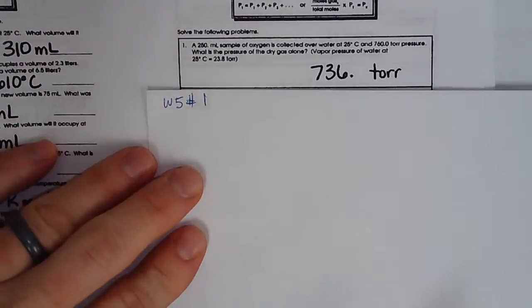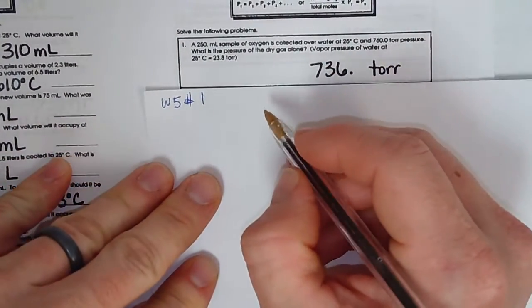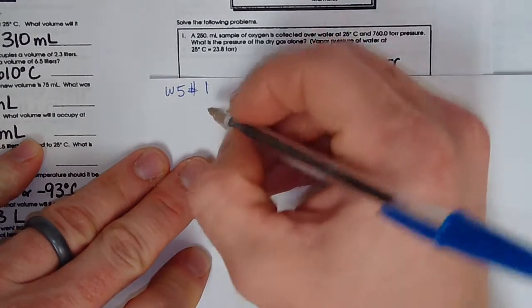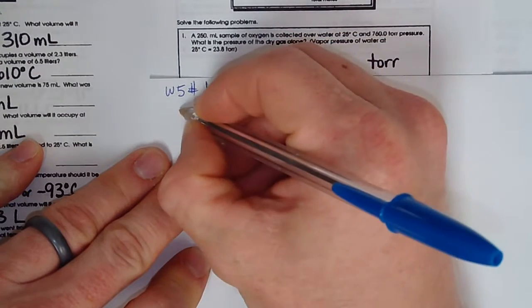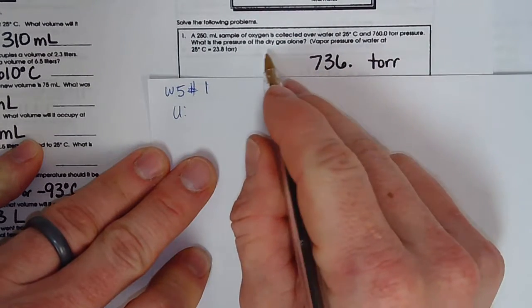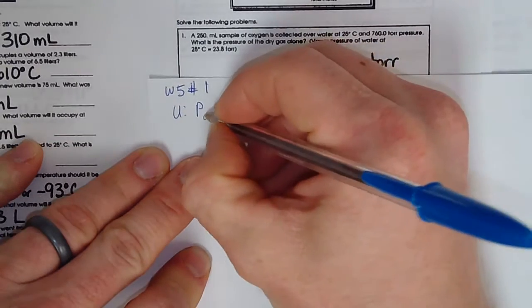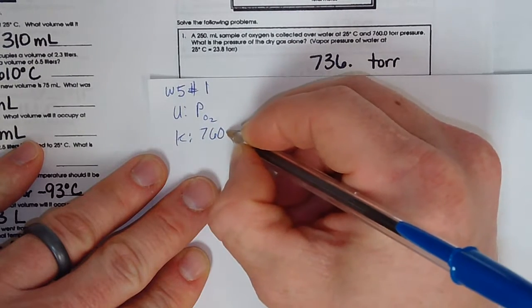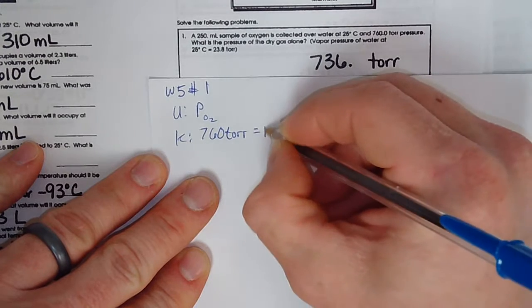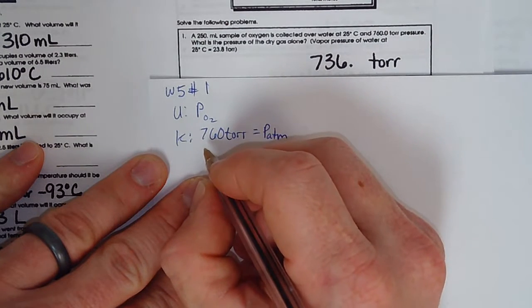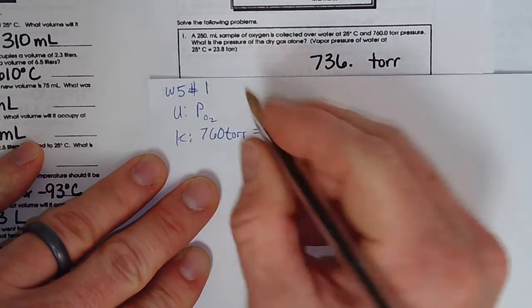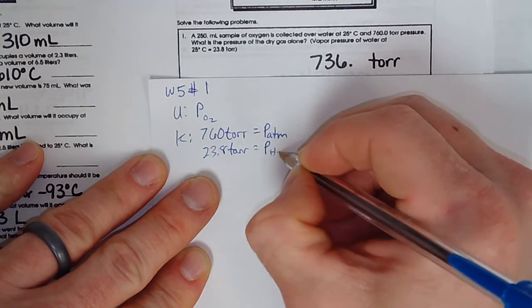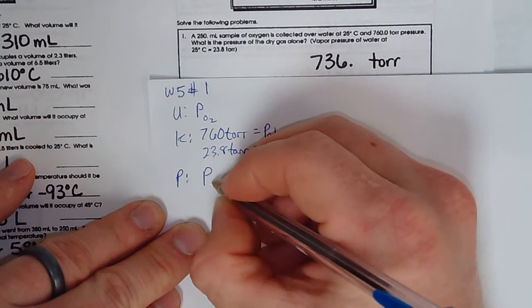All right, let's look at worksheet 5 a little bit. Dalton's Law of Partial Pressures is covered here, but you also have to combine it with some other concepts to arrive at the correct answers. So first off here, we want to know the pressure of the dry gas, so the pressure of oxygen. And the knowns, they tell us 760 torr is the total pressure, the atmospheric pressure, and the vapor pressure of water at that temperature is 23.8 torr.